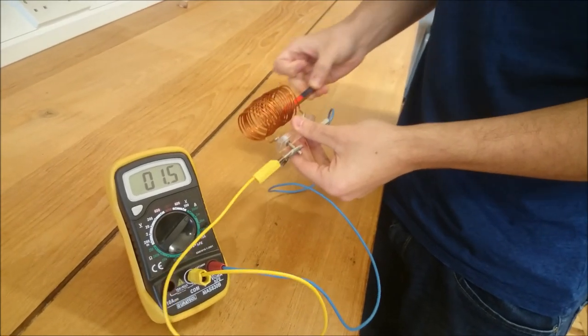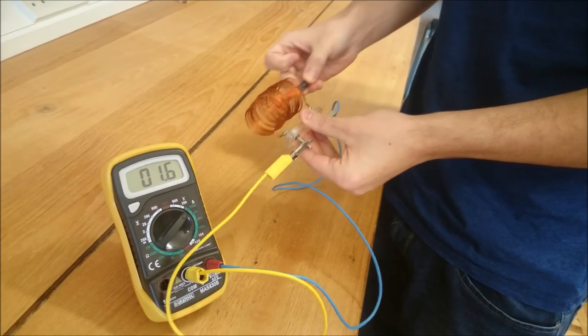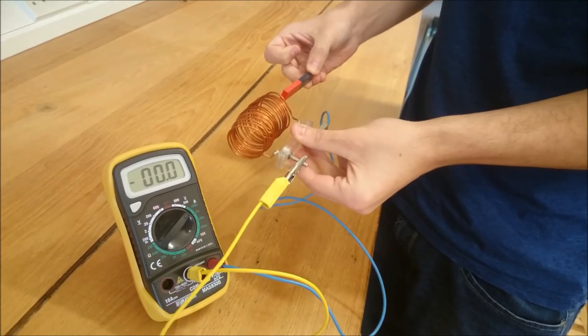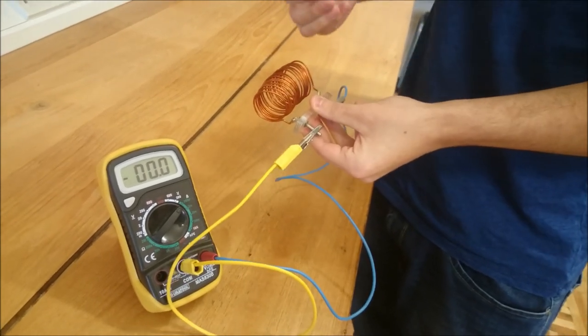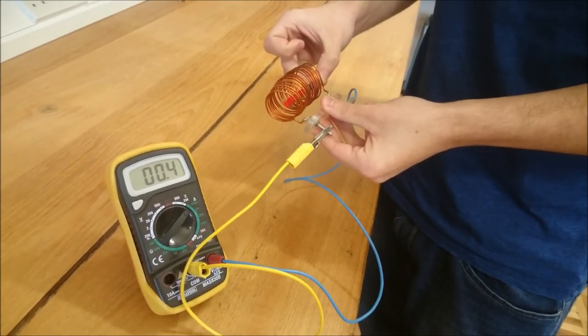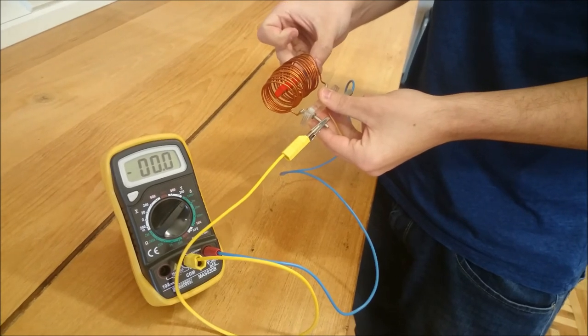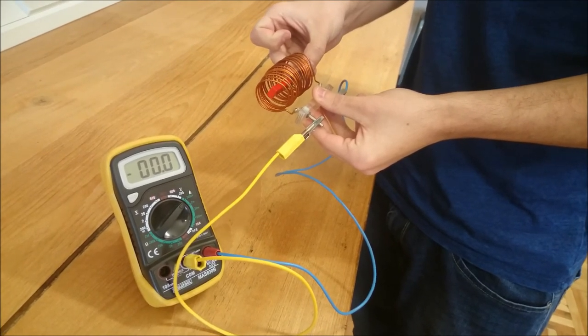So as you can see, there's a current reading. What you can do as well is move the coil through the magnet, and that will also cause a change in flux. And just if you're wondering, if the magnet is inside the coil stationary, obviously there's no change in flux, so there's no reading.